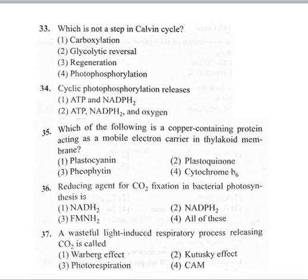Coming to the 35th question: which of the following is a copper-containing protein acting as a mobile electron carrier in the thylakoid membrane? Option 1 plastocyanin, option 2 plastoquinone, option 3 pheophytin, option 4 cytochrome b6. Plastocyanin is the copper-containing protein which acts as a mobile electron carrier in the thylakoid membrane. So the first option is correct.